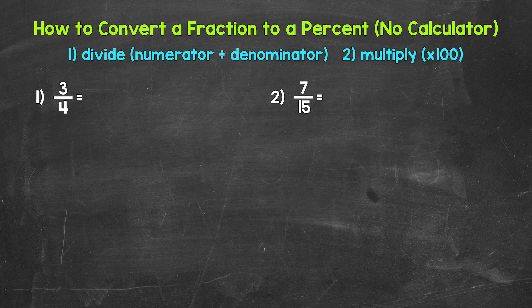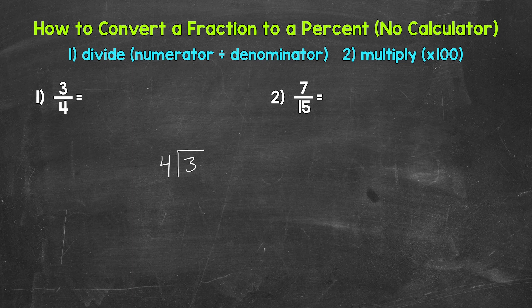Let's jump into our examples, starting with number one, where we have three fourths. We need to start by dividing the numerator by the denominator — three divided by four. Now, how many whole groups of four in three? We can't do that, so we need a decimal after three and then a zero in order to start to work through this problem.